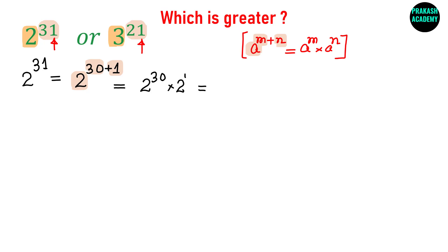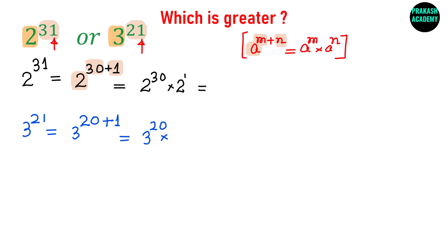Now we still want to simplify. If I do the same thing for the second number, 3 raised to the power 21, we get 3 raised to the power 20 plus 1, which is 3 raised to the power 20 multiplied by 3 raised to the power 1. So the exponents are still not the same — here I have exponent 30 and here I have exponent 20.